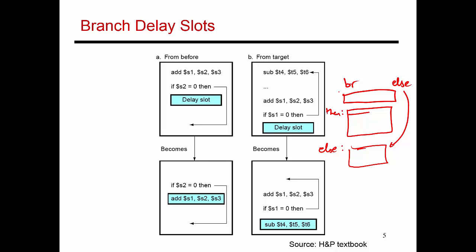So in the meantime, in cycle two, the instruction right after the branch is going to be fetched and executed no matter what. Regardless of which way the branch goes, I'm not going to squash that instruction — it will flow through the pipeline, finish its execution, and write a result into the register file. So now it's up to the compiler to find something useful to put into that branch delay slot, so I don't lose a cycle while figuring out which way the branch is going to go.